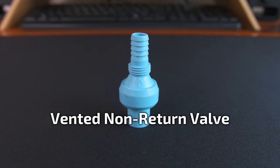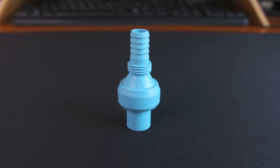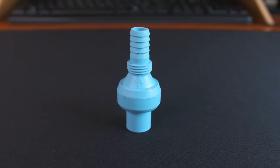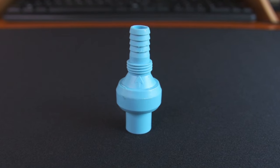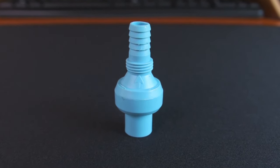This part is an optional extra. It's a vented non-return valve also made by Comet which will prevent any water in the hose flowing back through the pump after it's been turned off. I'm expecting it to reduce the flow rate a little but I think it's a worthwhile addition to the system.